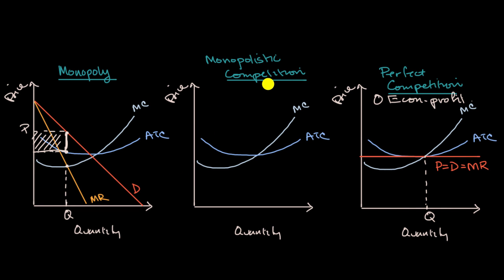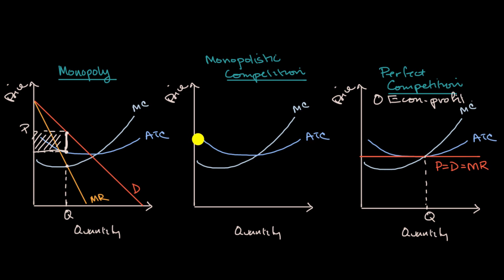In monopolistic competition, you aren't completely undifferentiated — you might have a brand or certain features that are better or worse — but there are other substitutes which people could go for, which gives you that competition. As more and more people enter, given the economic profit, your particular demand curve is going to shift down and to the left, and will keep shifting until you're no longer able to get any economic profit. Your demand curve might end up something like this.